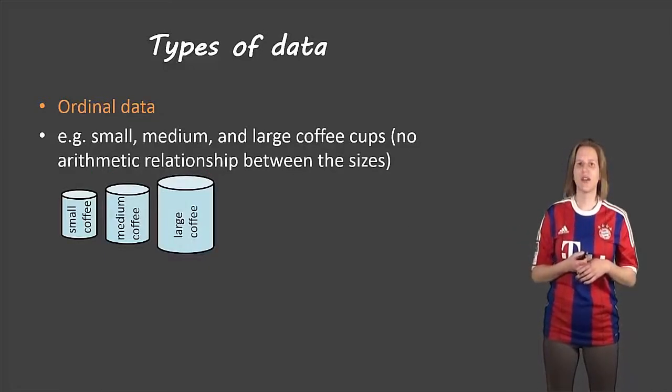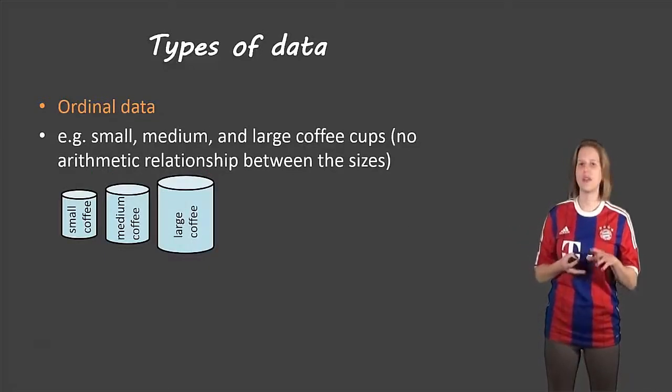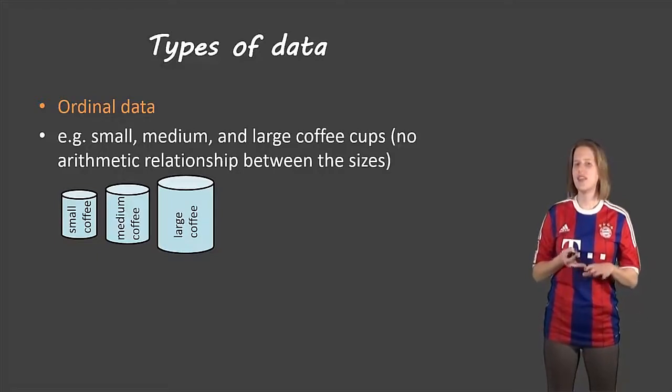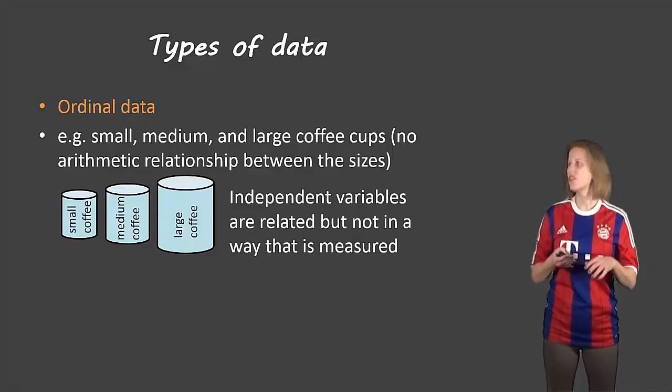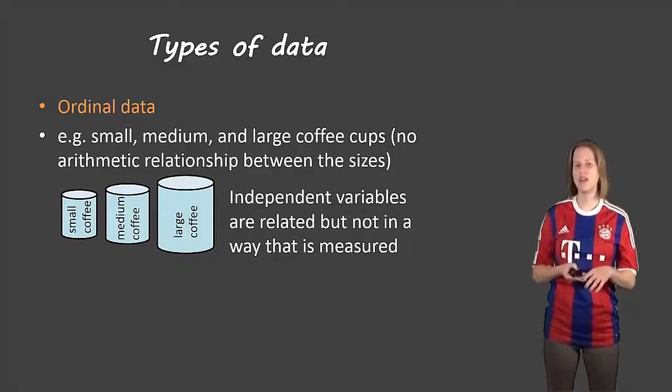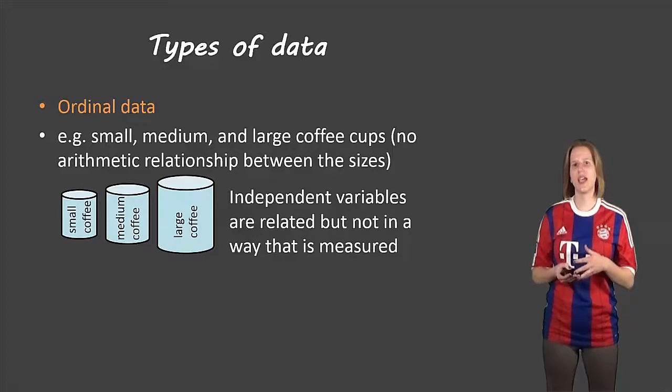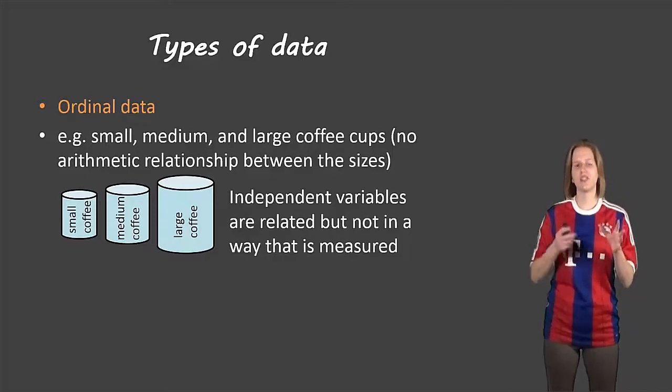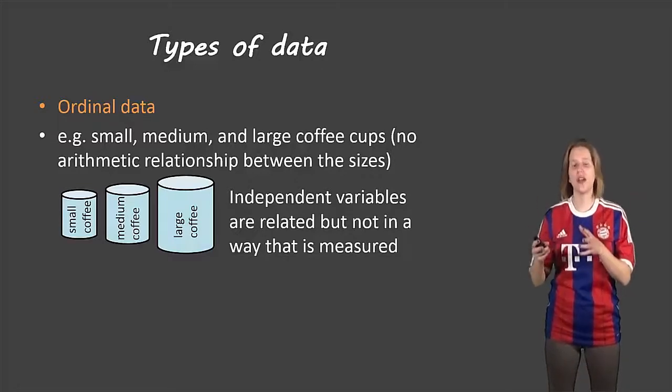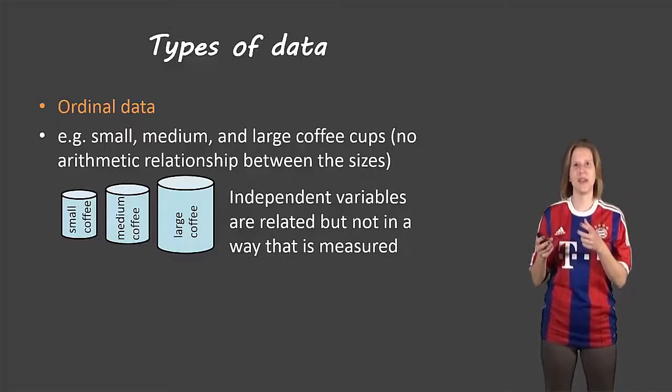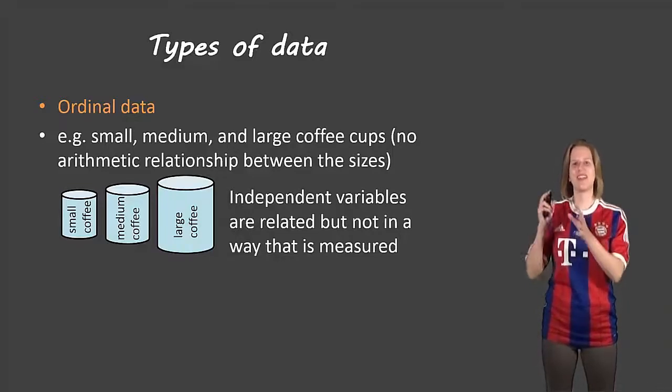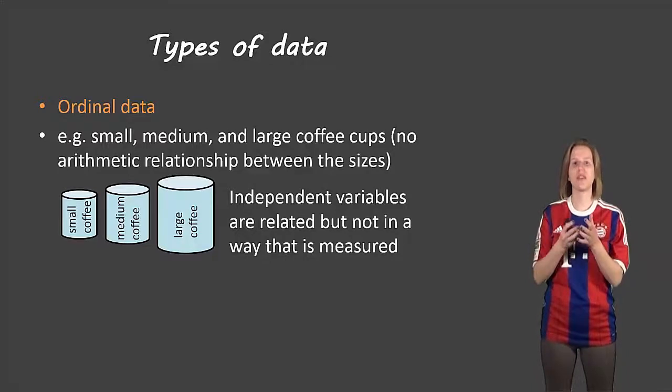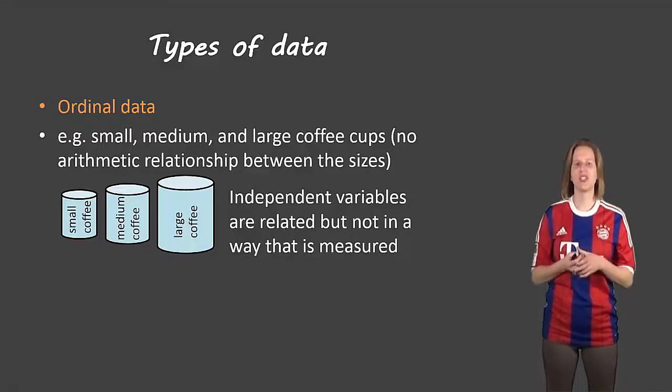The next type is ordinal data, and an example would be the small, medium, and large coffee cups. These are independent variables that are related but not in a way that's measured. So we can't say that the difference between small and medium is 100 milliliters and between medium and large is also 100 milliliters. So we might have the difference between 50 milliliters and the next one might be 100 milliliters. So there's different amounts. There isn't an arithmetic relationship.